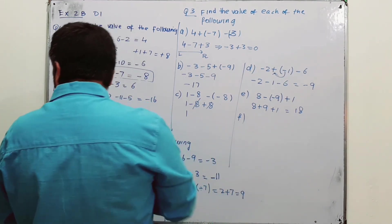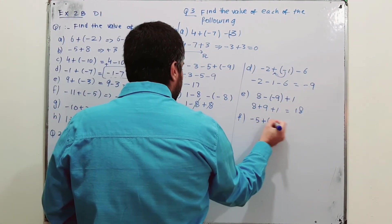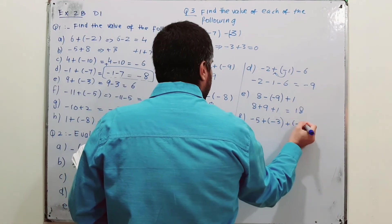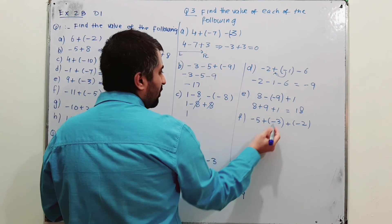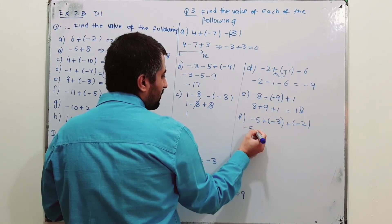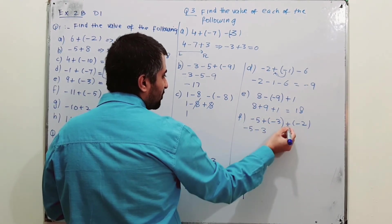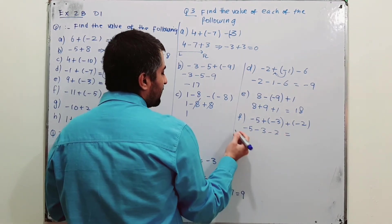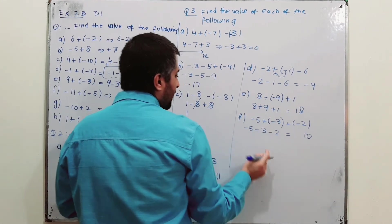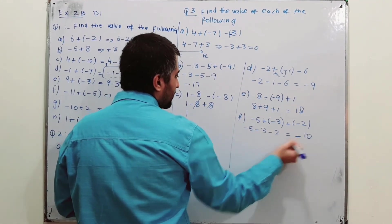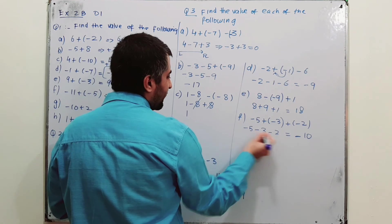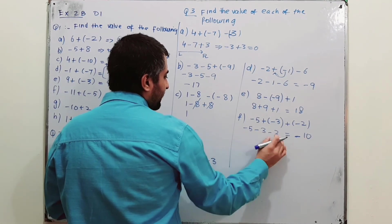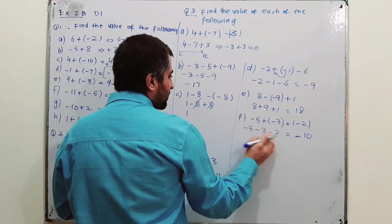Part F: minus 5 plus (minus 3) plus (minus 2). Open the brackets — minus times plus becomes minus — giving minus 5 minus 3 minus 2. All numbers have a negative sign, so add: 5 plus 3 is 8, plus 2 is 10, and the sign is negative, so the answer is minus 10.